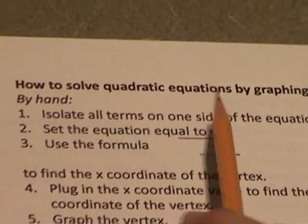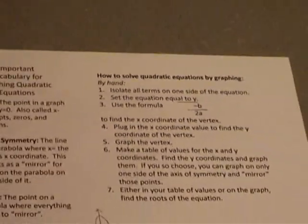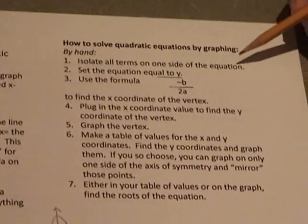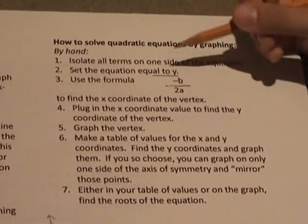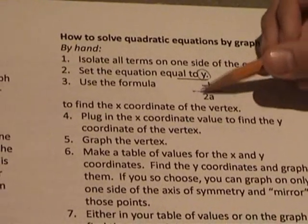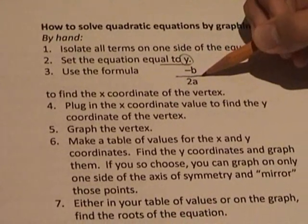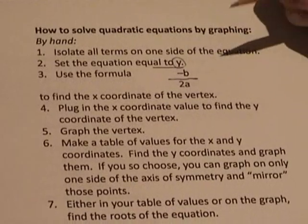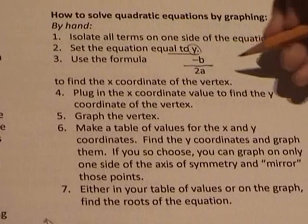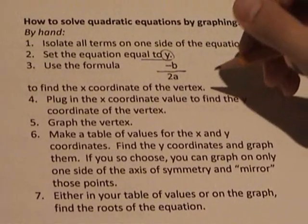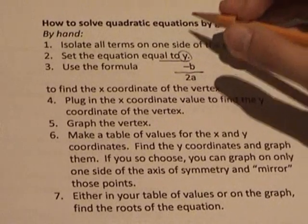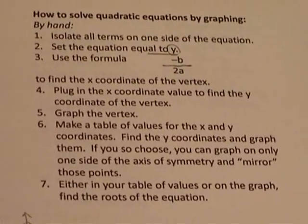The way to solve a quadratic equation by graphing by hand is you isolate all terms on one side of the equation. Since you're graphing it, you're setting it equal to y, not 0. Then using the formula negative b over 2a, you find the x-coordinate of the vertex. This is important because without the vertex, you can't accurately create a parabola.